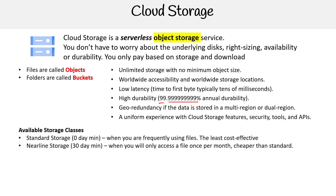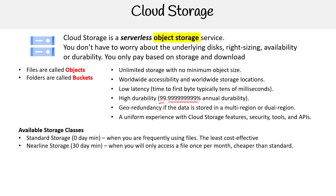You have Nearline storage — this is when you're going to be accessing a file on average once a month or less. It's going to be cheaper than standard storage, and the key thing is once a month or less. Then you have Coldline storage, which has higher access costs than Nearline storage, but a lower at-rest cost. So that's a bit of a trade-off there.